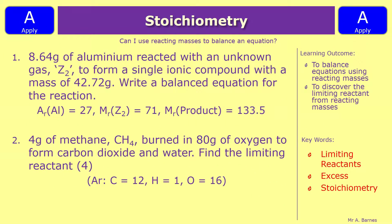Let's have a look at a question. Question one says 8.64 grams of aluminium reacted with an unknown gas Z₂ to form a single ionic compound with a mass of 42.72 grams. Write a balanced equation for the reaction. First work out the mass of each reactant and product. Next work out the moles using the given atomic and molecular masses. Then divide by the smallest — but note that you'll get an unwhole number, so you need to multiply up to get everything to a whole number.